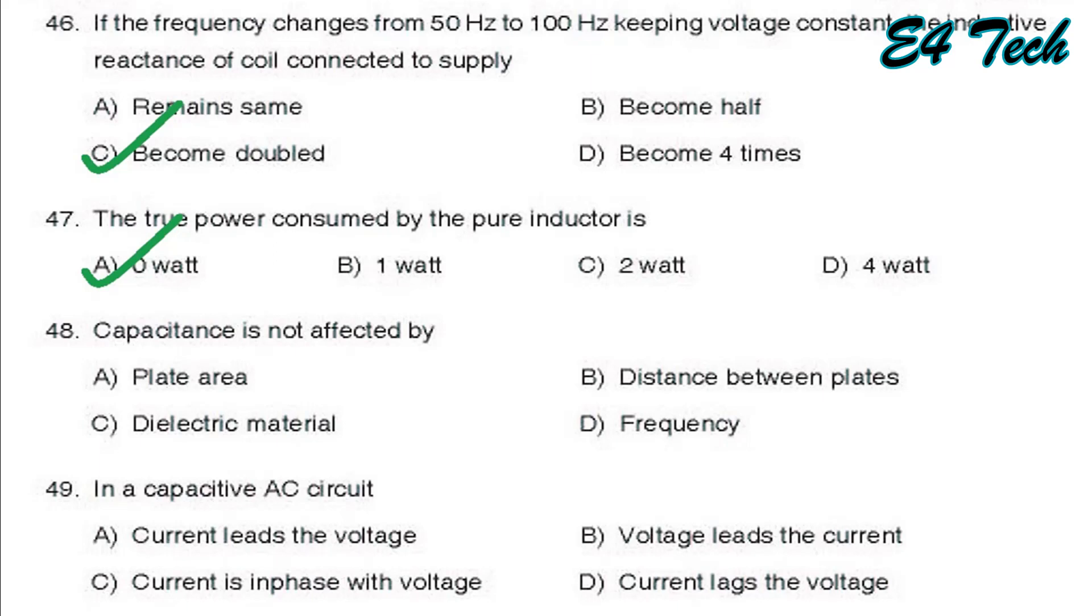Next, in a capacitive AC circuit. Capacitive circuit current leads the voltage, voltage leads the current, current is in phase with the voltage, current lags the voltage. In a capacitive circuit, the current will lead the voltage. That is option A, current leads the voltage.